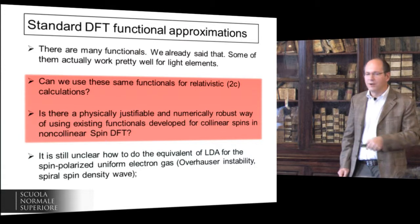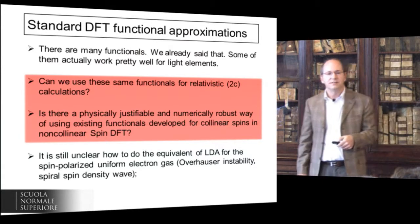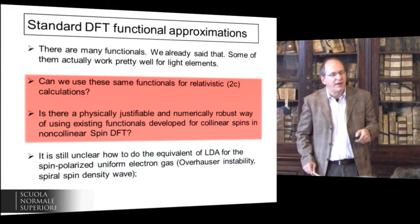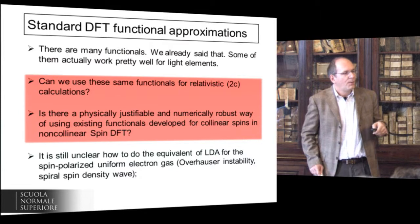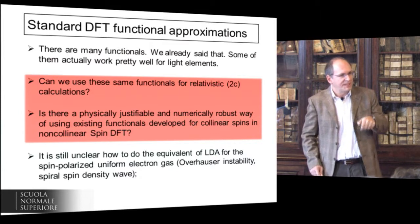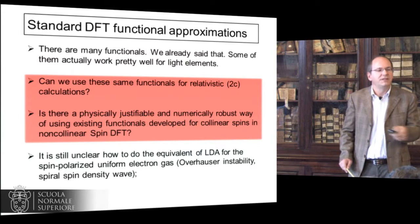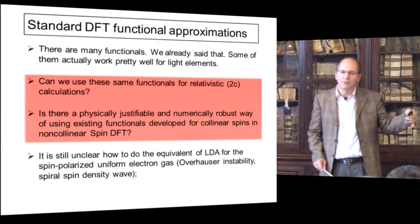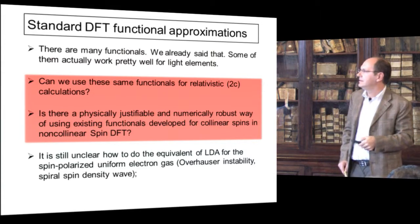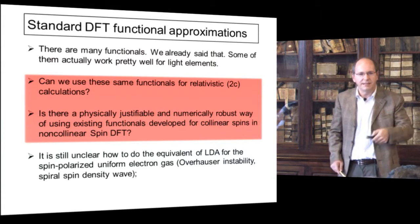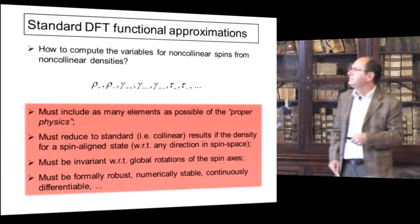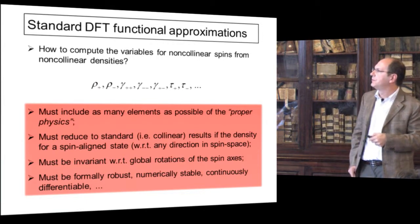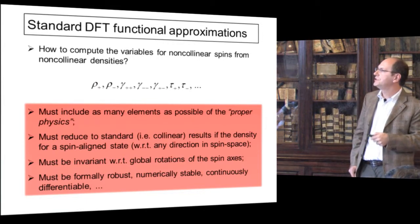My understanding is that it is not even clear how to do LDA for the spin-polarized uniform electron gas, which contains spin spirals. So we don't have LDA for that, which is the basic system for which you would do a proper treatment of the magnetization vector density in DFT. The question is: if the functionals depend on this small number of variables — we change the labels from alpha/beta to plus/minus — how do we compute these variables from the fully non-collinear two-component densities?